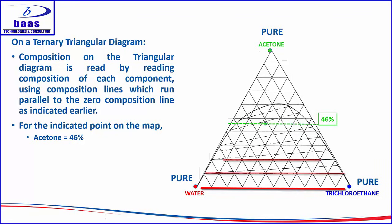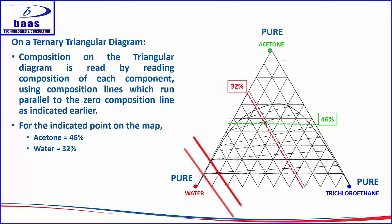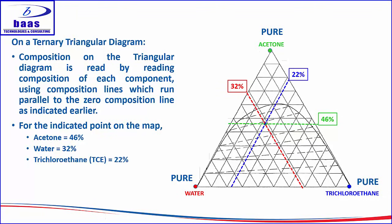Reading the acetone composition, we have zero percent, ten percent, twenty percent, thirty percent, forty percent — and at that point, approximately forty-six percent acetone. For water, starting from one hundred percent and moving down: ninety, eighty, seventy, sixty, fifty, forty, thirty — and that point represents approximately thirty-two percent water. The trichloroethane composition can then be calculated from the component balance, knowing that all three components must add to one hundred percent.